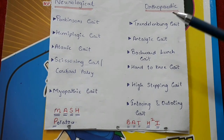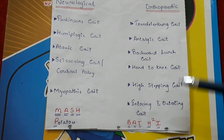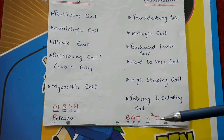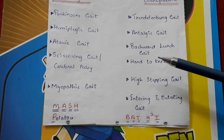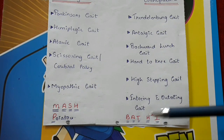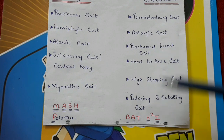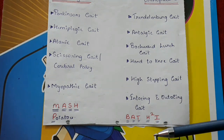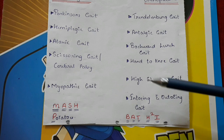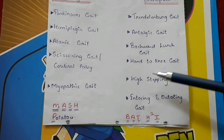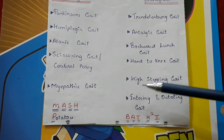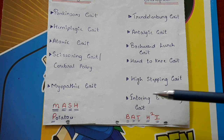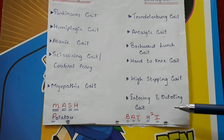For orthopedic gait, the mnemonic is 'BET H² I': B for backward lurch gait, A for antalgic gait, T for Trendelenburg gait, H² for hand to knee gait and high stepping gait, and I for in-toeing and out-toeing gait.